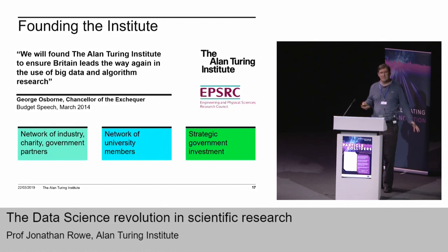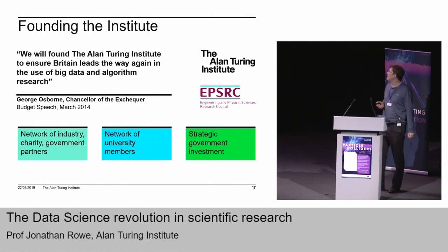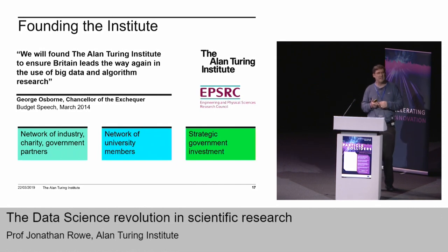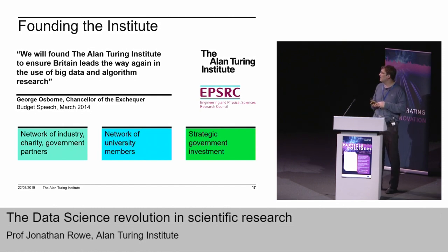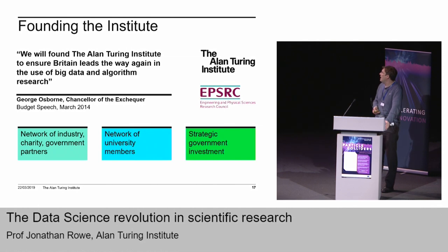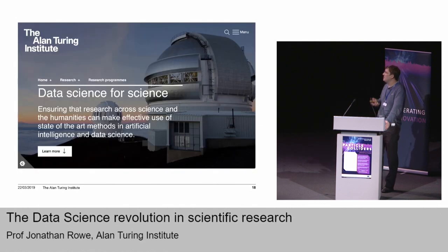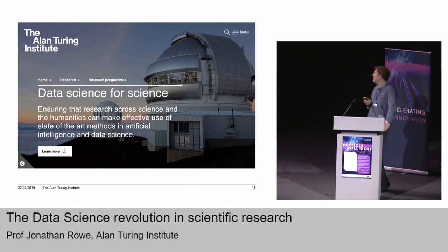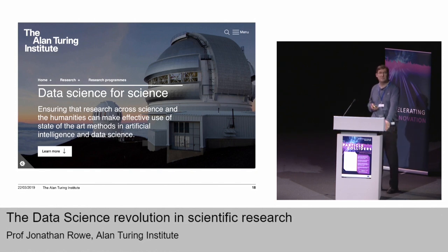Now we come to the Alan Turing Institute, where I work, and our role in bringing these methods of data science and AI into science. It was founded in 2014 and started operating in 2015. It's the UK's National Institute for Research in Artificial Intelligence and Data Science — a network of industry, government, and universities, based in the British Library in London. One of the programs we started just last year is the Data Science for Science program, which aims to ensure that research across science and humanities can benefit from these methods in AI and data science.